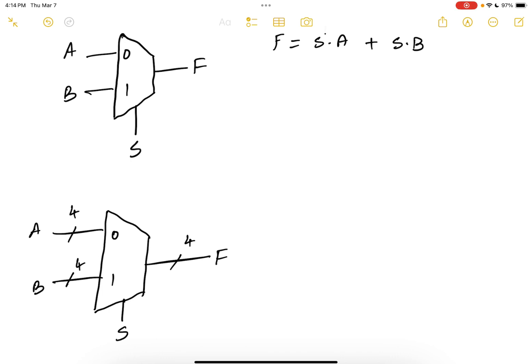So for this, you have F of 0 equals S prime, A of 0 or S and B of 0. F of 1 equals S prime, A of 1 or S and B of 1. Similarly, you can have F 2 and F 3.